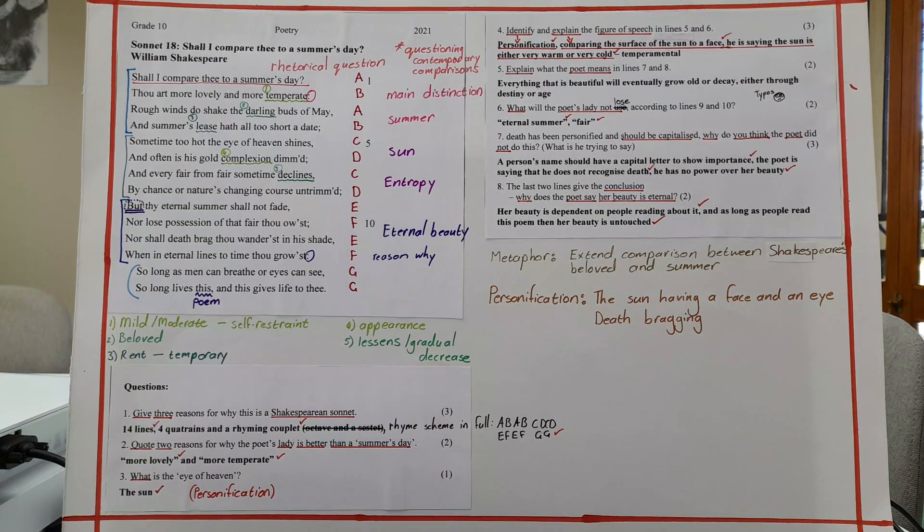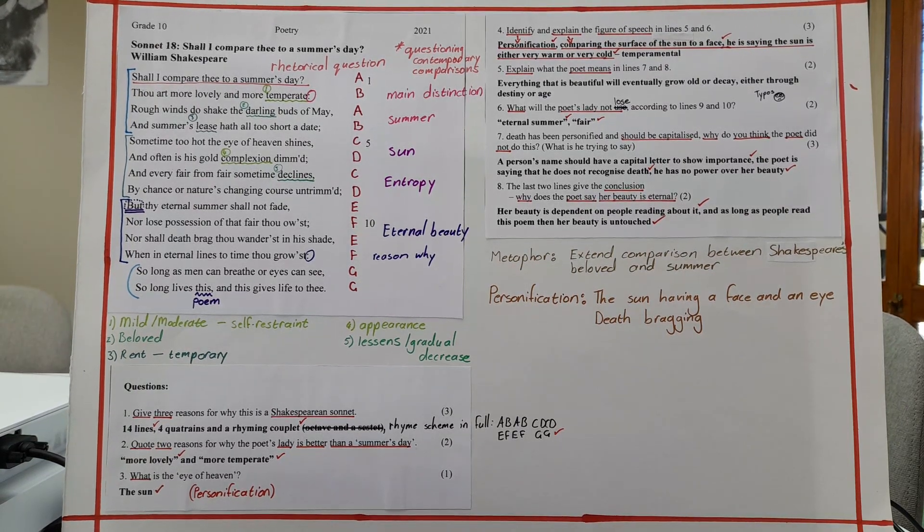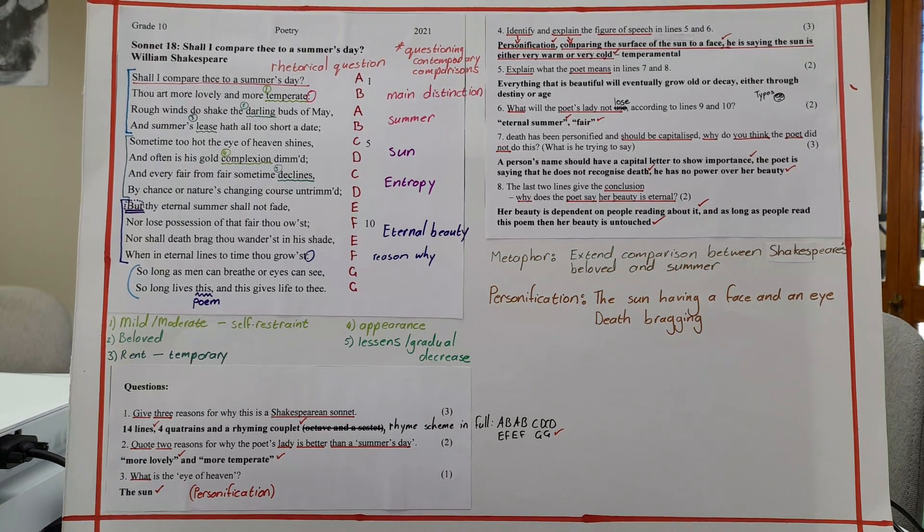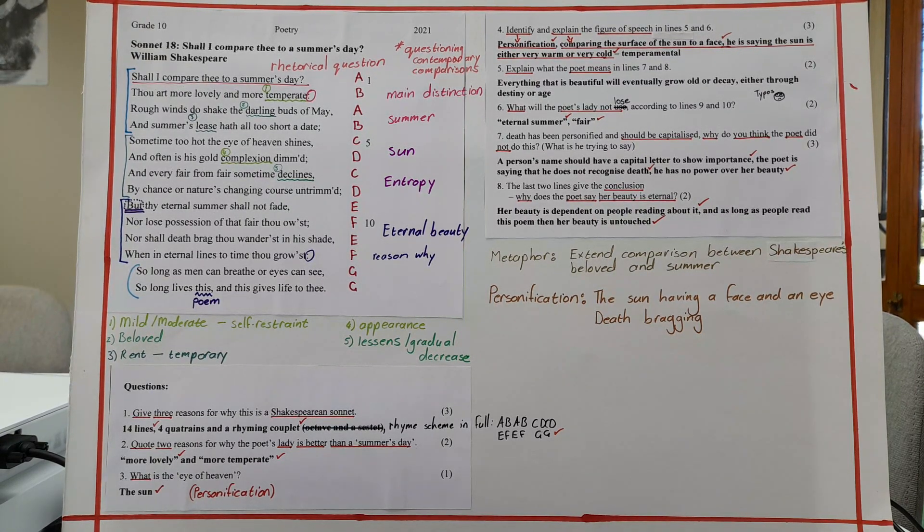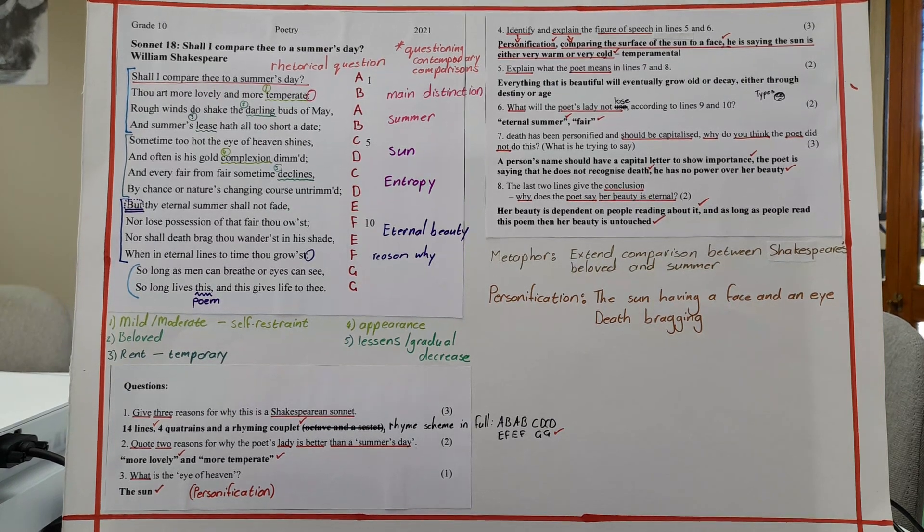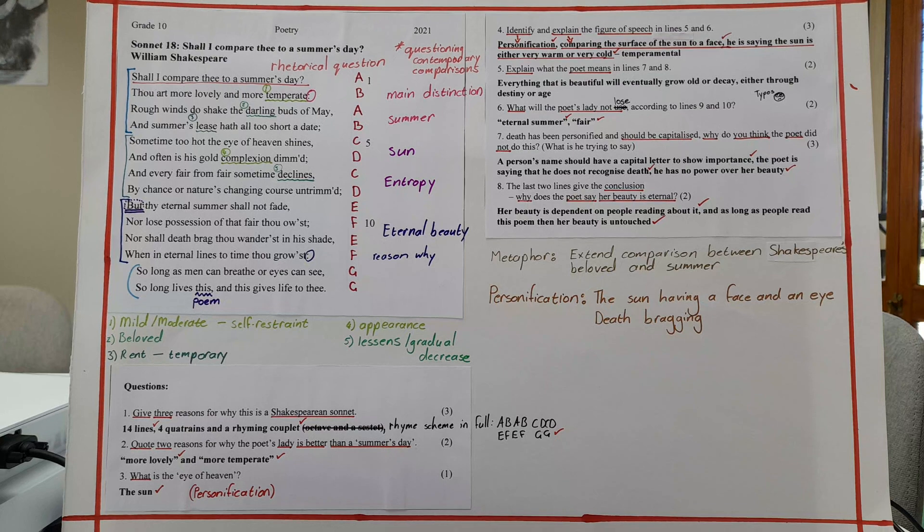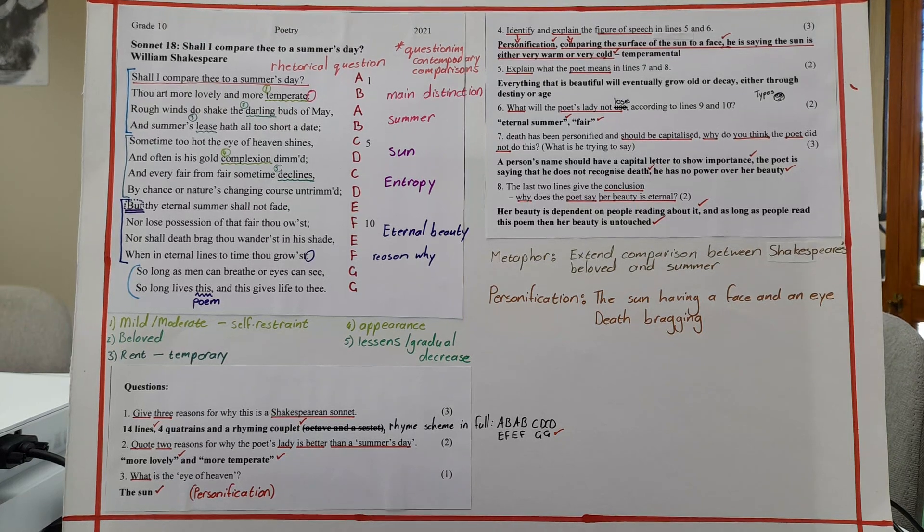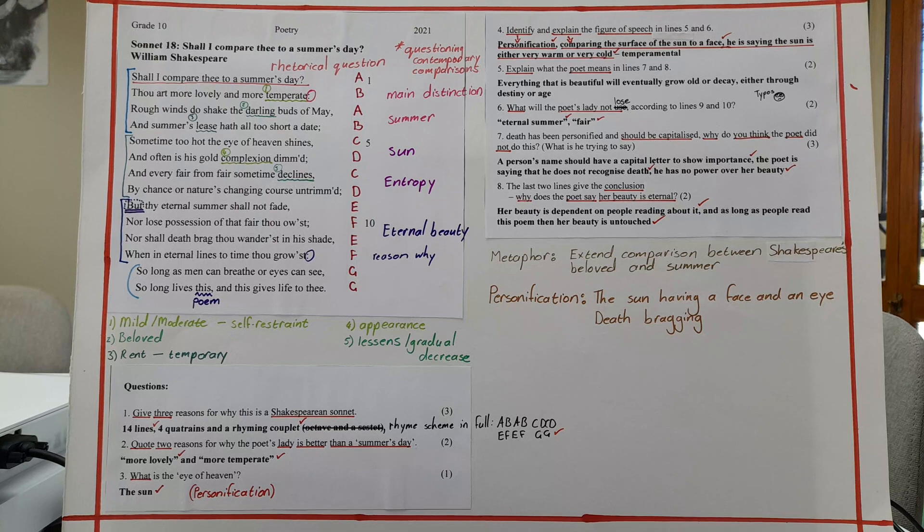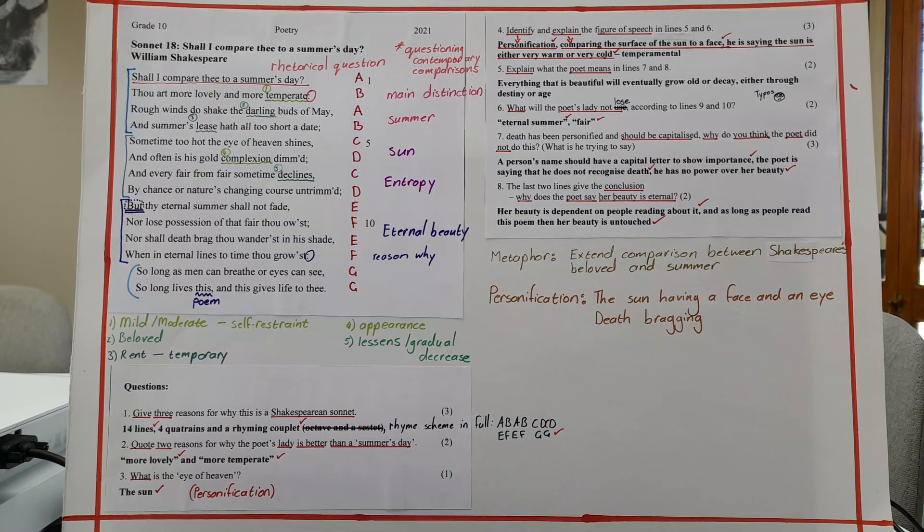Number four, identify and explain the figure of speech in lines five and six. So this is for three marks. And you'll see that I've drawn some arrows there at the top and underlined, identify and explain the figure of speech. Because what a lot of people do is they identify it and they tell me what it is, but then they don't explain in context of the actual poem. And that's a problem. And you're going to lose unnecessary marks. So number one, it's a personification. Okay, what is it doing? It's comparing the surface of the sun to a face.